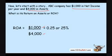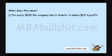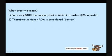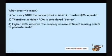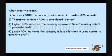So now we can say that this company's ROA, or return on assets, is 25%. This means that for every $100 the company has in assets, it makes $25 in profit per year. Therefore, a higher ROA is considered better. A higher ROA indicates that the company is more efficient in using assets to generate profit. A lower ROA indicates that the company is less efficient in using assets to generate profit.